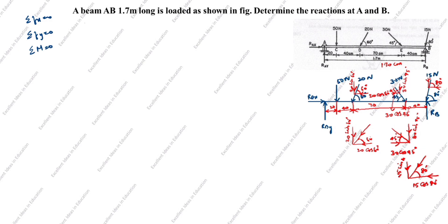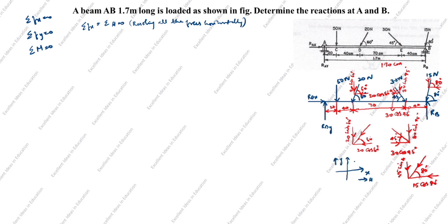First, we take summation of Fx = 0, resolving all forces horizontally. Using the sign convention: rightward is positive, upward is positive. We see RAX arrow goes to the right, so it is positive. The horizontal component of the 20 Newton force at 60° goes in the opposite direction, so it is minus 20 cos 60°.